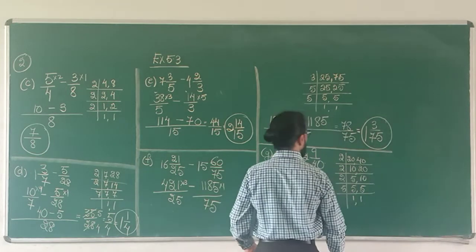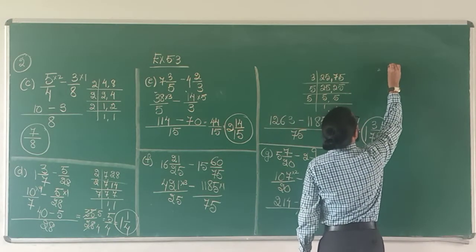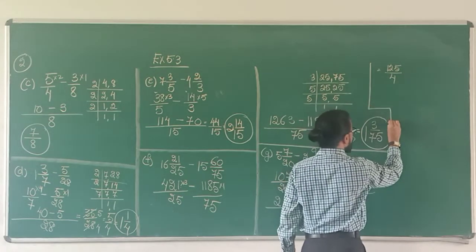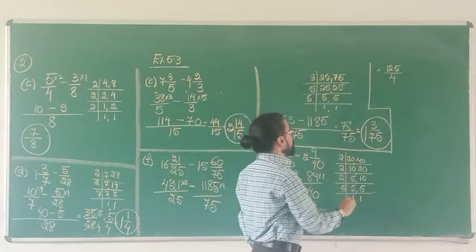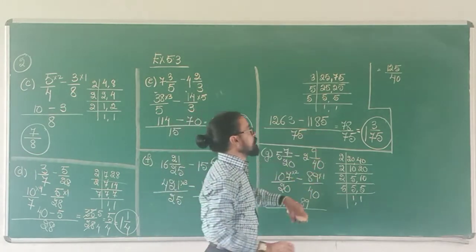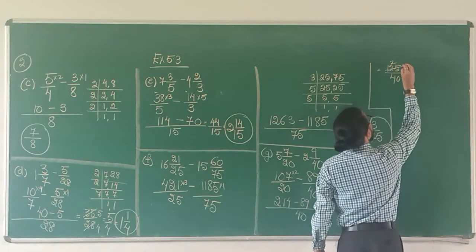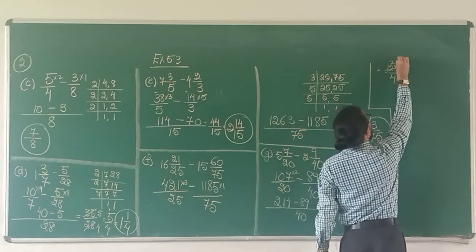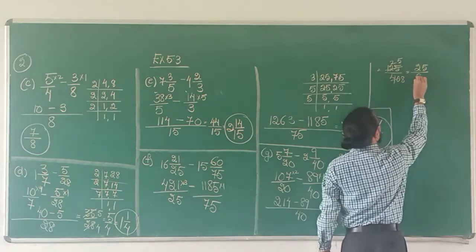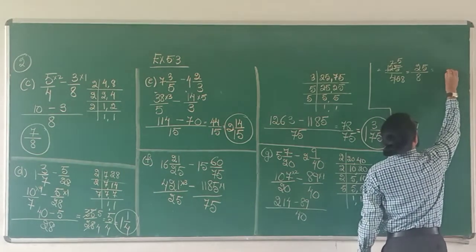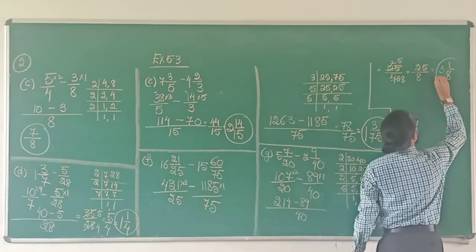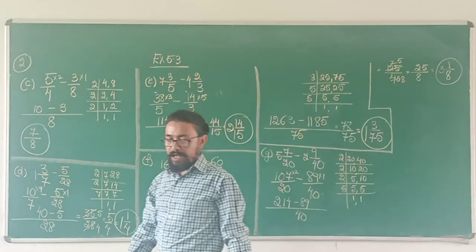125 upon 40 is my answer. Again I ask myself can it be reduced to its lowest term? Yes it can be reduced to lowest term because 125 and 40 is divisible by 5. 5 5's 25, 5 8's 40. Now it cannot be reduced so I change it to a mixed fraction. 8 goes into 25, 8 3's 24, remainder 1. So my answer 3 1 upon 8.